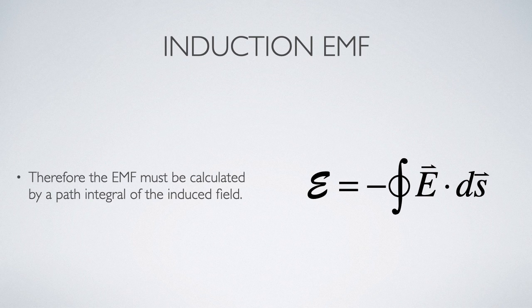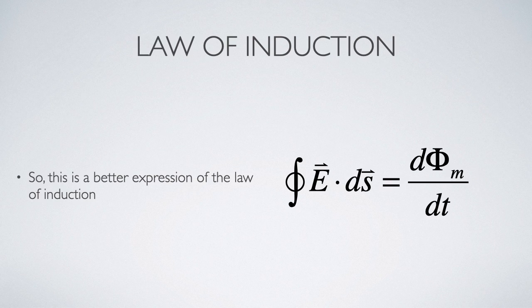What this means is that the EMF can't be calculated by the conventional integral from point to point. It must be calculated by a path integration like that used in Ampere's law. So this is a better representation of the law of induction: the path integral of the field around a closed loop is equal to the rate of change of the magnetic flux passing through that closed loop.